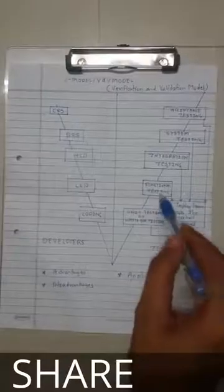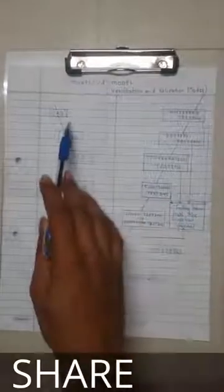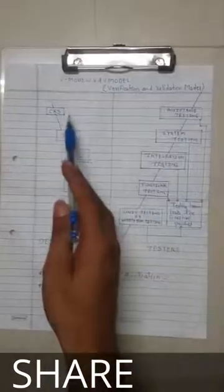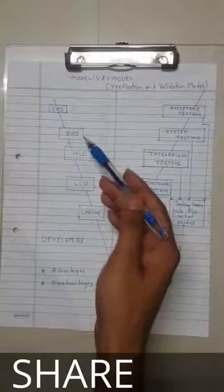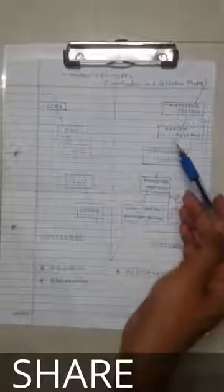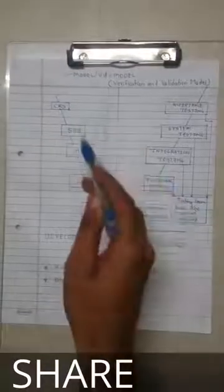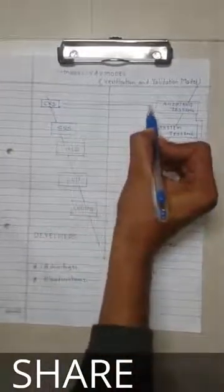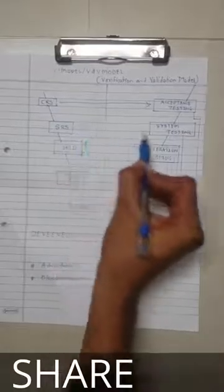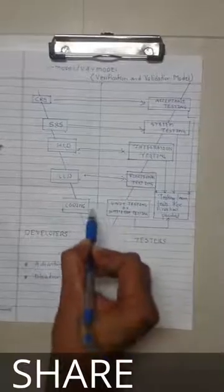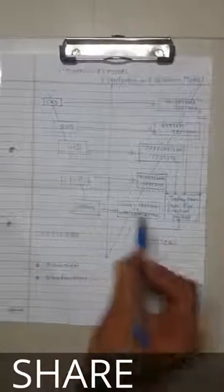To summarize the cycle: first CRS is created, then it is converted to SRS. The testing team reviews the CRS while the SRS is being developed. Developers then move to HLD, and the testing team tests the SRS. The sequence proceeds through acceptance testing, system testing, integration testing, functional testing at LLD, and coding.